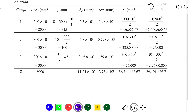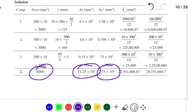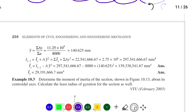From the table, we sum all values: total area, sum of A×Y, sum of A×Y², sum of Ix, and sum of Iy. The Y-bar value is found by: Y-bar = ΣAY / ΣA = 11.25 × 10⁵ / 8000 = 140.625 mm.